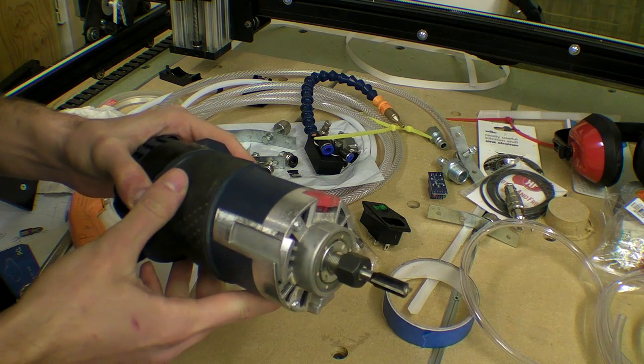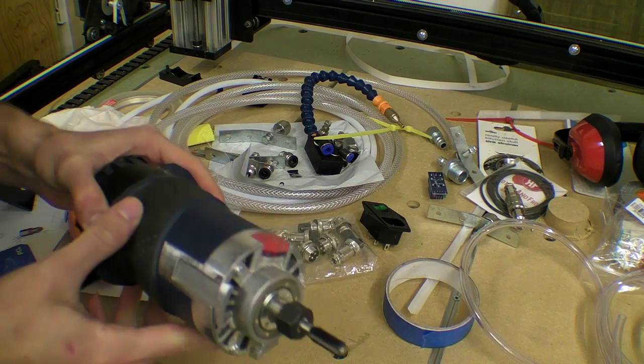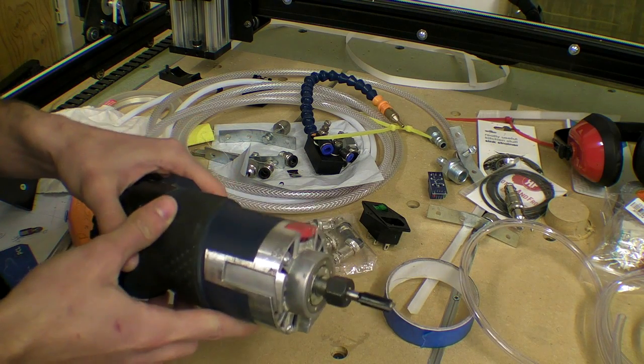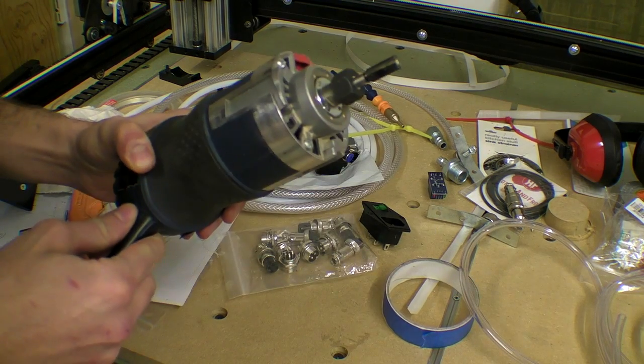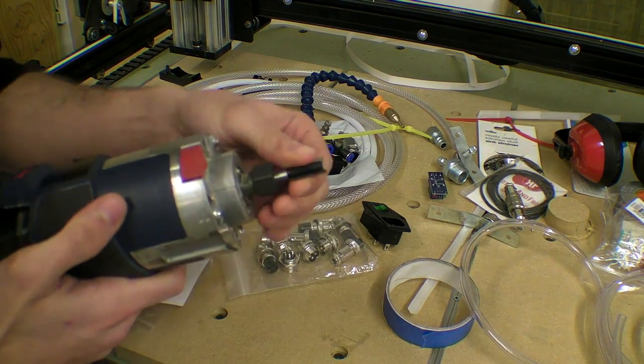If you look at spindles that are available for CNC machines they on average go up to 24,000 and that's all you need. That means they're quieter, they run cooler, this is a little bit overkill I think at that speed.